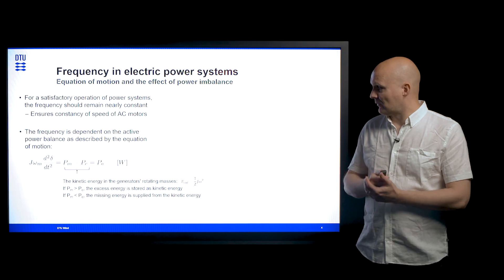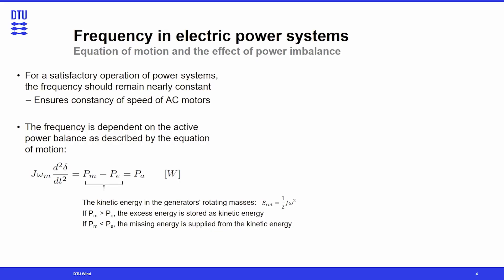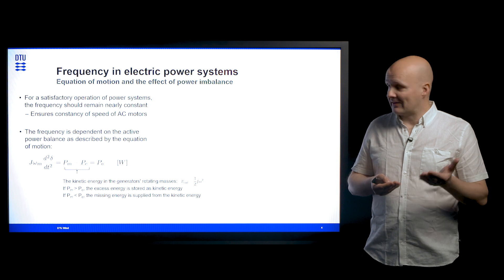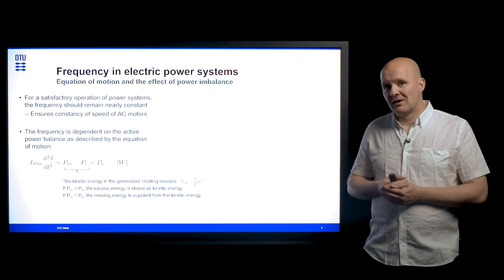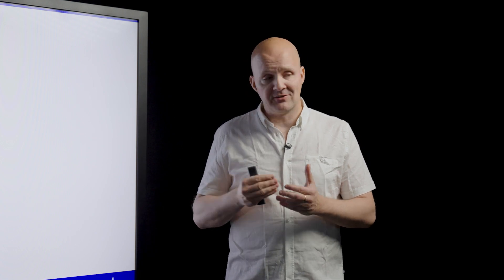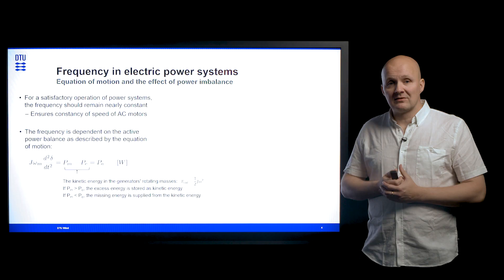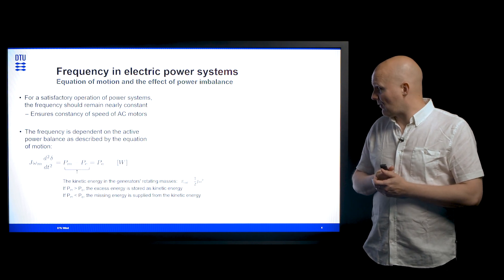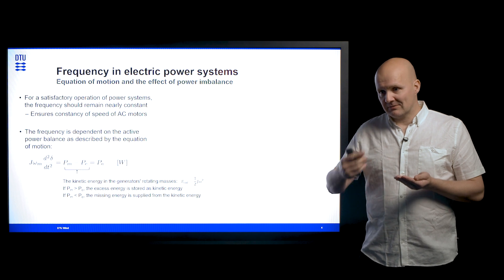The reason for that is that if we take a look at the equation for kinetic energy stored in the generator's rotating masses — which is given here as half times the moment of inertia times the angular velocity squared — we can see that the frequency squared is proportional to the kinetic energy. So when we have an imbalance, for example where the electrical loading is greater than the input mechanical power, the energy missing to supply the load is taken from these rotating masses and their kinetic energy, and that's why the frequency declines. If it was the other way around, where mechanical power was in excess of electrical power, this excess energy would be stored as kinetic energy and the frequency would increase.